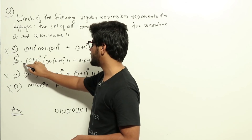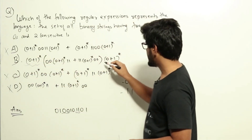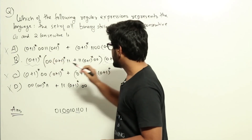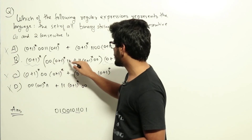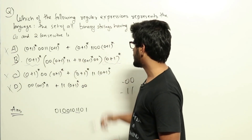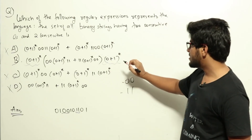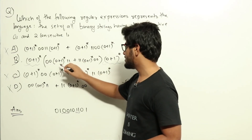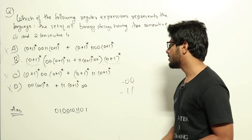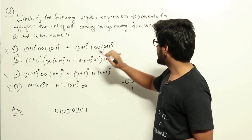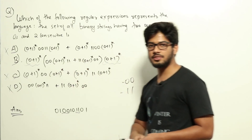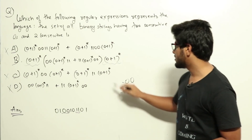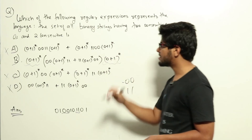The only option left is option B. It starts and ends with (0+1)*, and in the middle it has either 00 (0+1)* 11 or 11 (0+1)* 00. This correctly generates strings which have both 00 and 11 as substrings — either 00 appears first then 11, or 11 appears first then 00. It also doesn't generate strings having just 00 or just 11 alone. So option B is the correct answer.